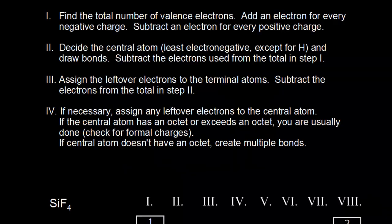Here are some guidelines for drawing dot structures. Let's say we wanted to draw the dot structure for silicon tetrafluoride. The first thing we need to do is find the total number of valence electrons, which we account for in our dot structure.